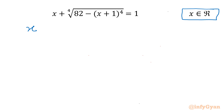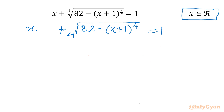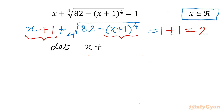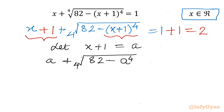Let's get started by writing our equation first: x plus the 4th root of (82 minus (x+1)^4) equal to 1. Now I will add 1 to both sides, so the RHS will be 2. Notice that in the LHS we have x+1 everywhere, so I will use substitution. Let x+1 equal to A.